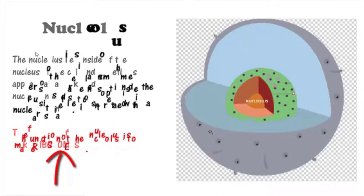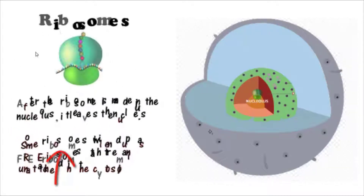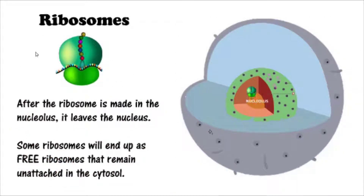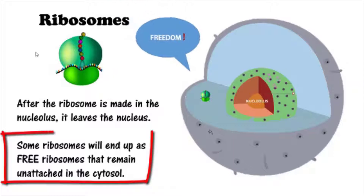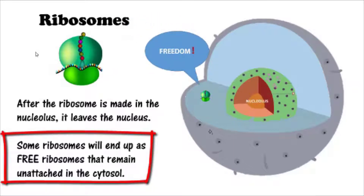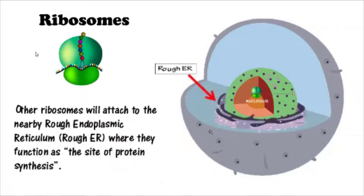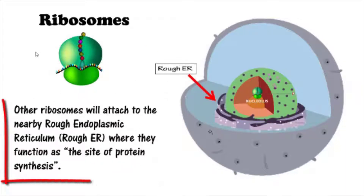After the ribosome is made in the nucleolus, it leaves the nucleus. Some ribosomes will end up as free ribosomes that remain unattached in the cytosol, while other ribosomes will attach themselves to the nearby rough endoplasmic reticulum.